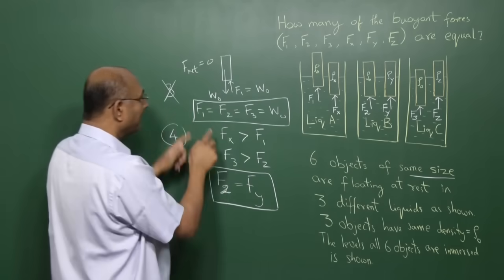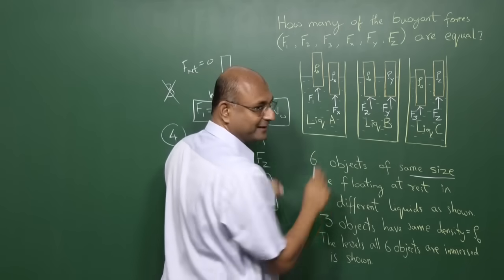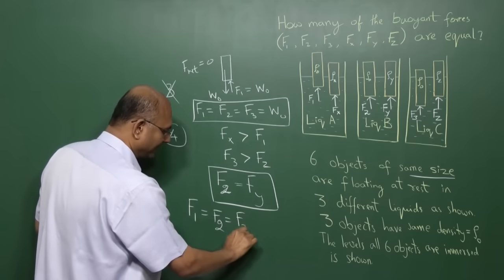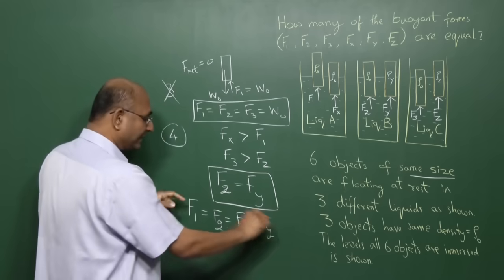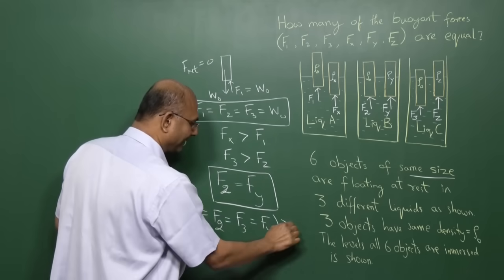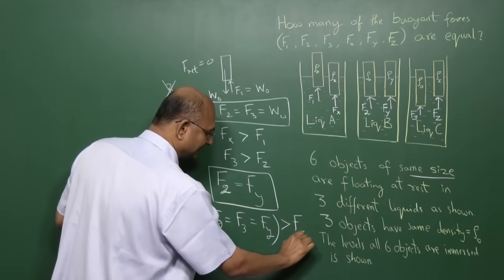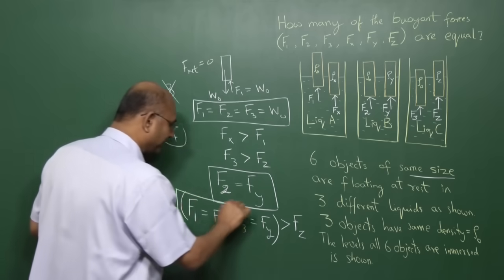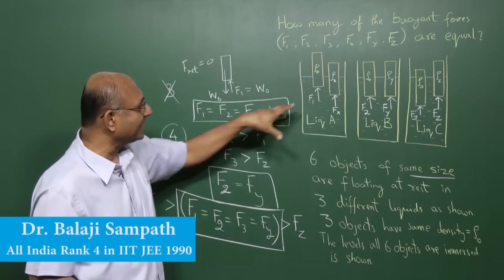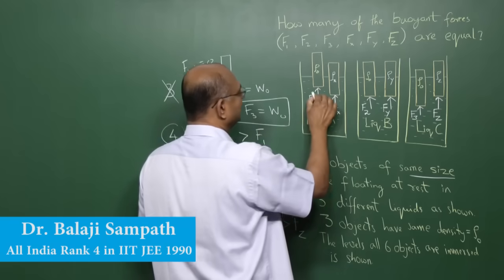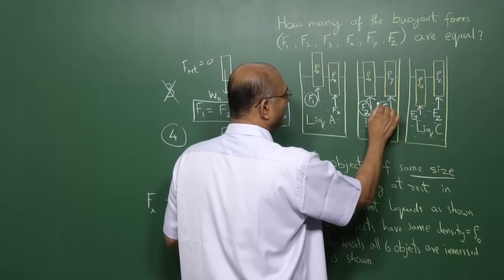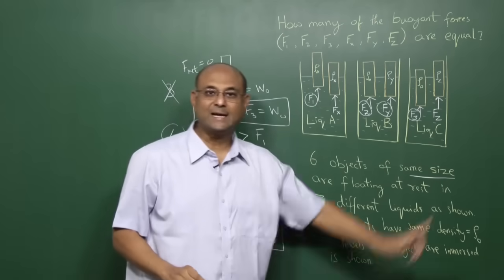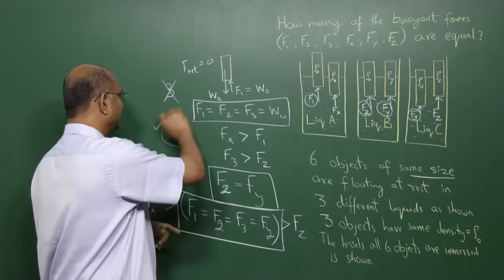So the buoyant force must be equal. F2 is equal to Fy. And already we know that F1, F2, and F3 are equal. So F1 is equal to F2 is equal to F3 is equal to Fy, and this whole group is greater than Fz. And of course Fx is greater than all of them. So how many of the buoyant forces are equal? The forces that are equal are F1, F2, Fy, and F3. Fx and Fz are not equal to the group. Therefore, the answer is 4.